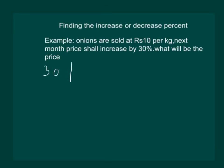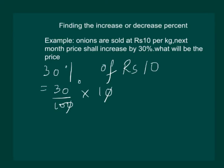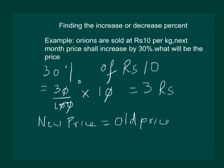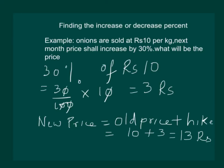We calculate 30% of rupees 10 to find out how much the hike is in terms of rupees. That is 30/100 multiplied by 10, which comes out to be 3 rupees. Now the new price next month would be equal to the old price plus the hike. Our old price was rupees 10 and the hike is rupees 3, so from next month you will get onions for rupees 13 per kg.